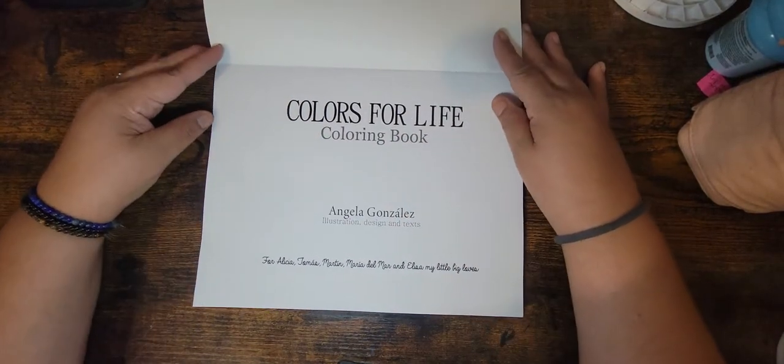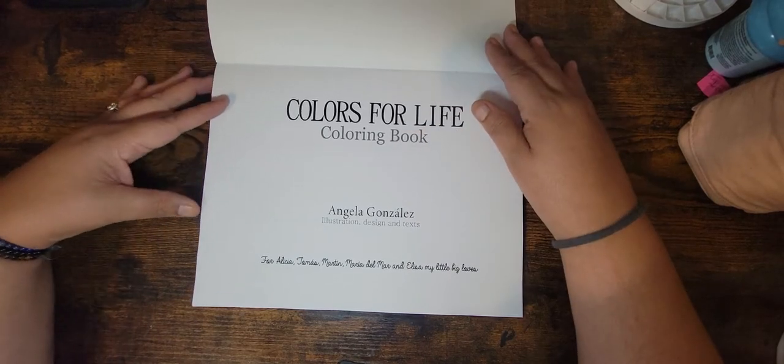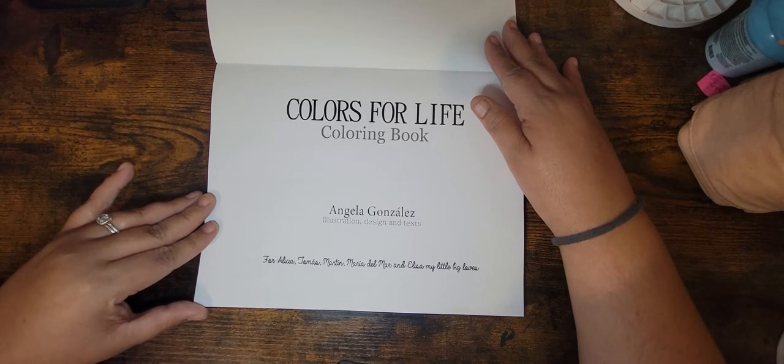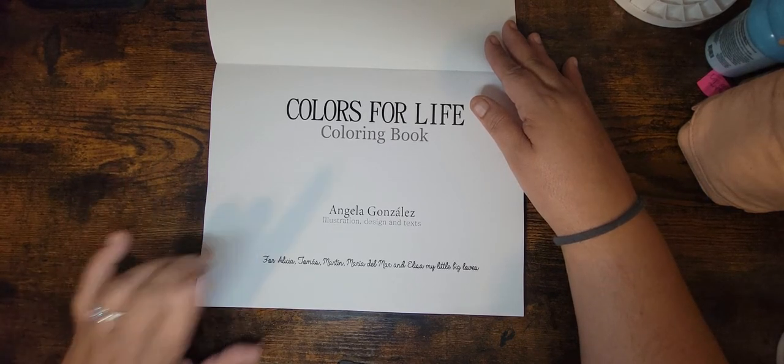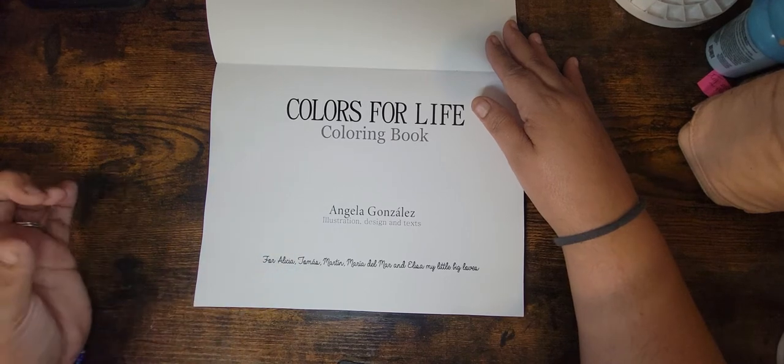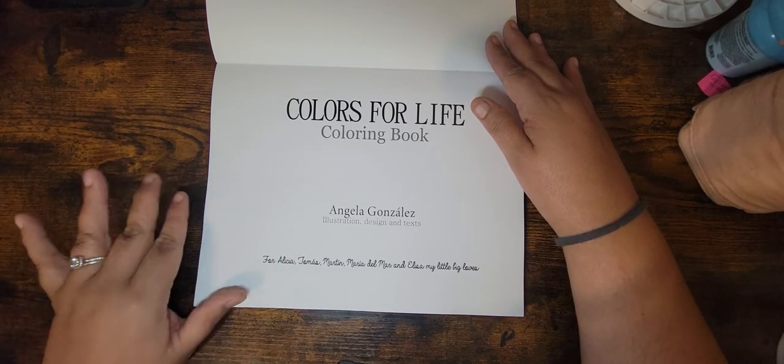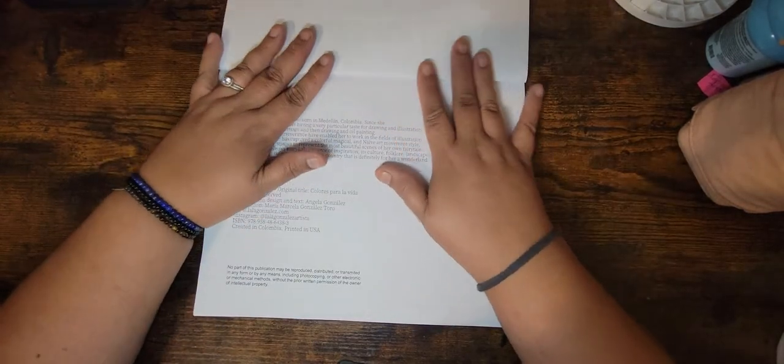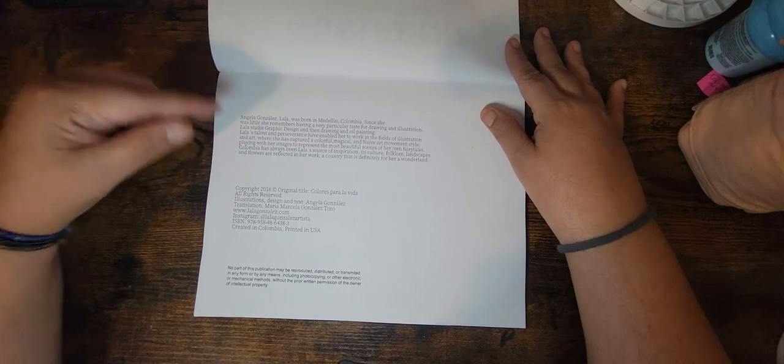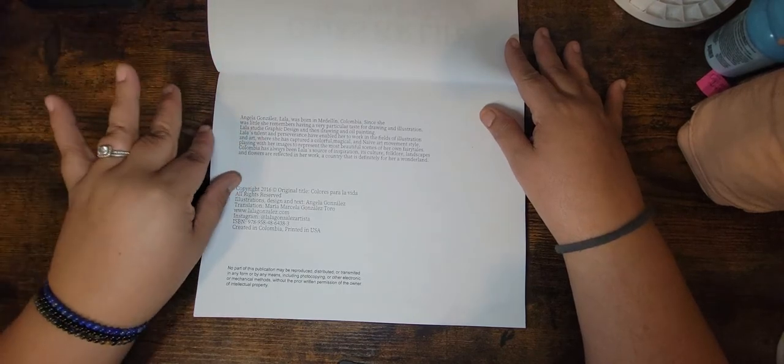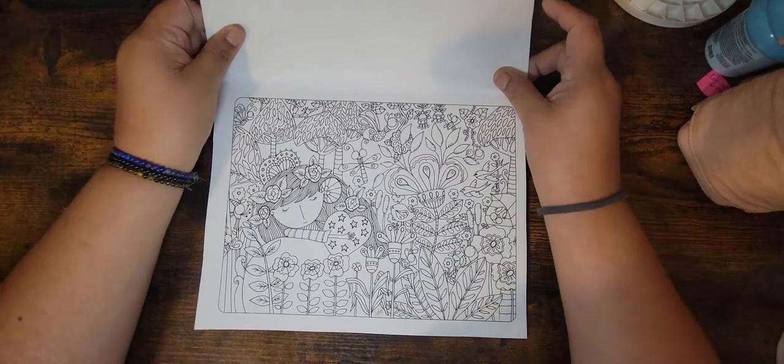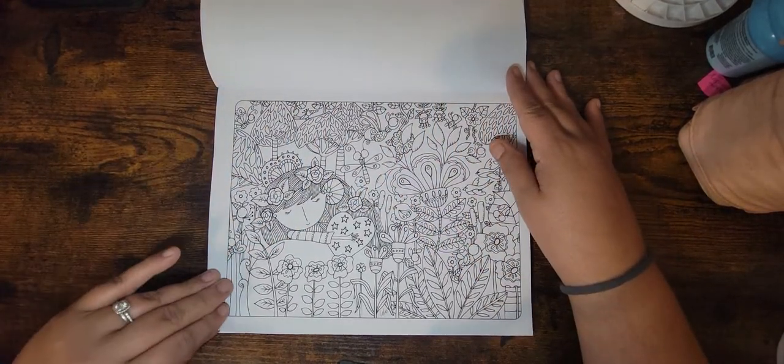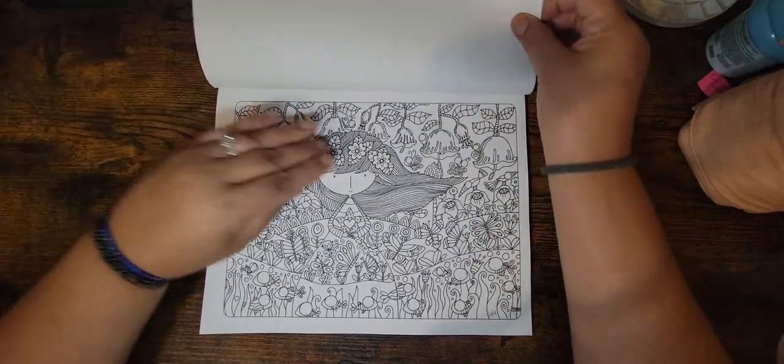And this is Colors for Life coloring book by Angela Gonzalez. Then I think she has a dedication to her kids. I think that's correct. It says for Alicia, Tomas, Martin, Maria del Mar, and Alicia, my little big gloves. So cute. And this was published in 2016. So it's been out for a little while. First page, and these are one-sided. So cute.